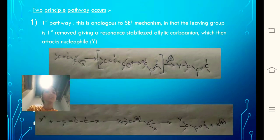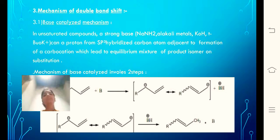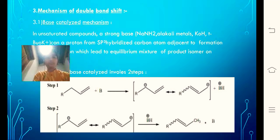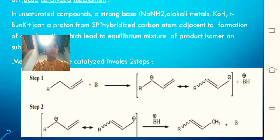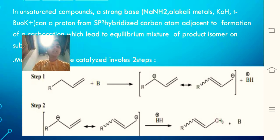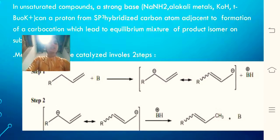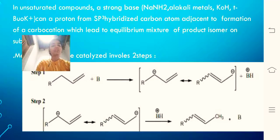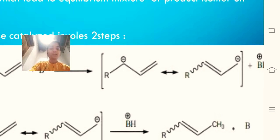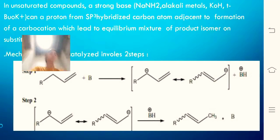Coming to the mechanisms of the double bond shift — firstly, the base catalyst mechanism. This proceeds in two steps. In step one, a base abstracts a proton from an allylic carbon of an alkene bearing an R group, giving rise to a carbanion which undergoes rearrangement at the terminal carbon. In step two, further attack by BH⁺ gives the product. The R group is represented such that both cis and trans isomers are possible.